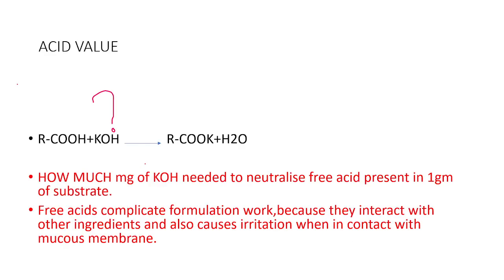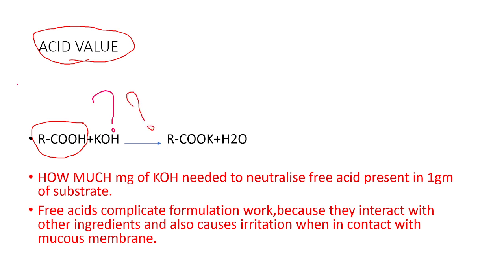Next is the acid value. Any compound that contains free fatty acids requires calculation of the acid value. The acid value is defined as how many milligrams of potassium hydroxide (KOH) are required to neutralize the acid groups present in 1 gram of fat. For example, if 1 gram of fat contains one COOH group, then only 1 KOH is needed, so the acid value is 1.